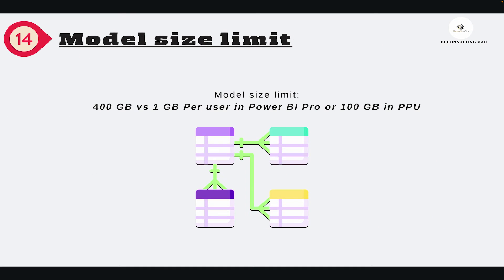Next is Model Size Limit, referring to how large your dataset can be on Power BI service. With Power BI Pro the limit is 1 GB. With Power BI Premium you can build up to 400 GB of your data model, and with PPU you can build up to 100 GB. This can be a major reason to switch to Power BI Premium when working with very large datasets.